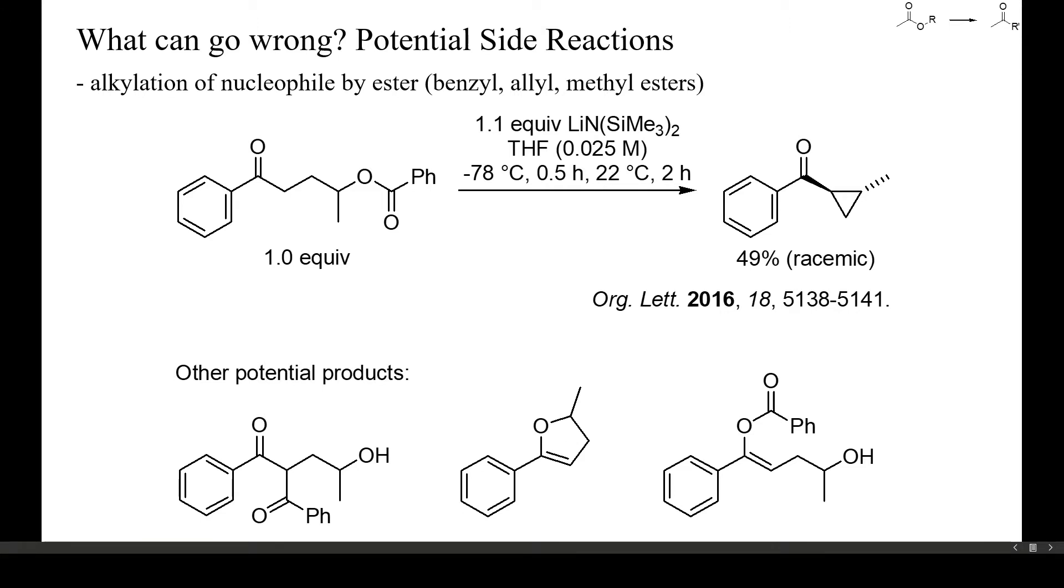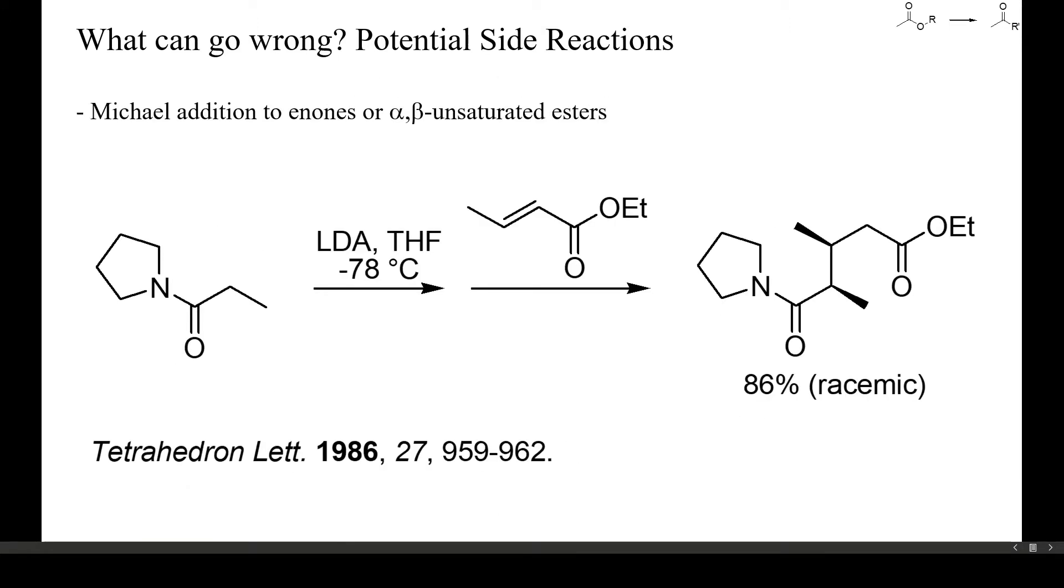Michael addition is a further potential side reaction that is difficult to predict correctly. The most reactive Michael acceptors are electron-deficient alkenes with a terminal methylene group, such as acrylates or methacrylates, while crotonates, as in this example, or cinnamates undergo Michael additions more slowly. Anyway, as this example shows, also crotonates can react with carbon nucleophiles at the CC-double-bond, even when no transition metals are present.